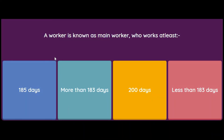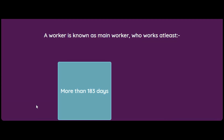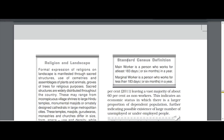A worker is known as a main worker who works at least how many days? Options are 185 days, more than 183 days, 200 days, or less than 183 days. The answer is more than 183 days. According to the book, a main worker is a person who works for at least 183 days or six months in a year; a marginal worker works for less than 183 days or six months in a year.